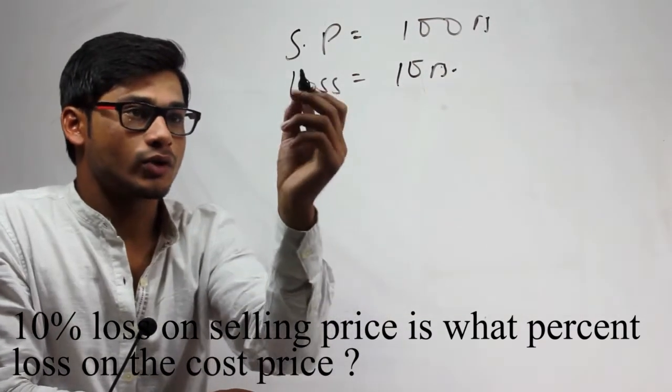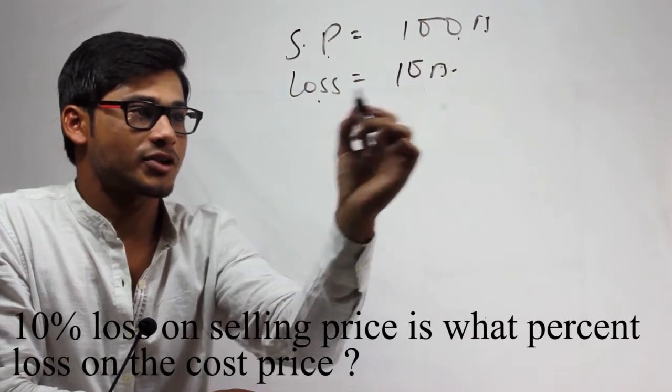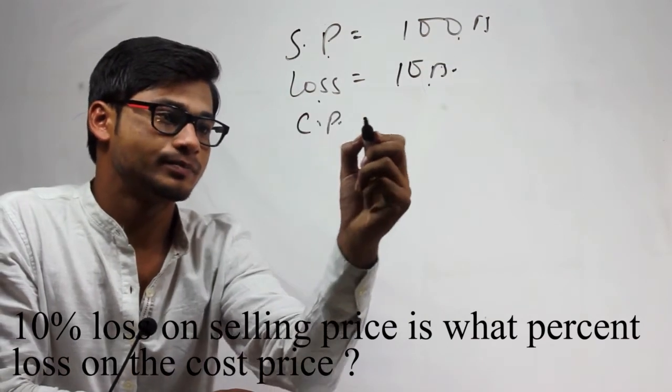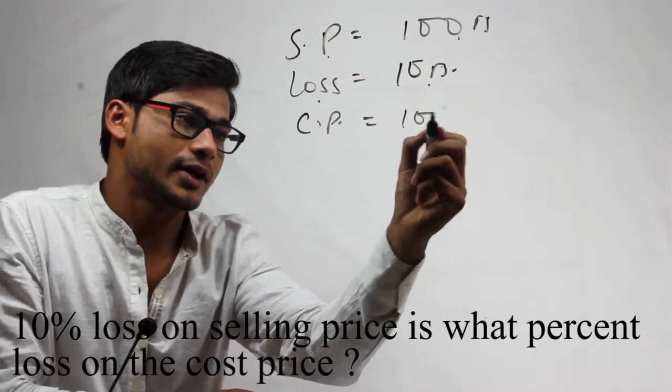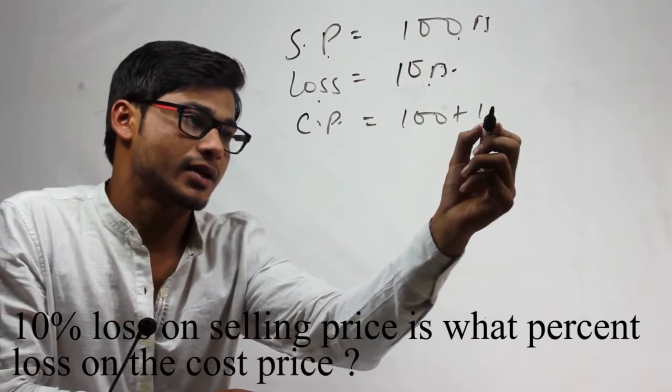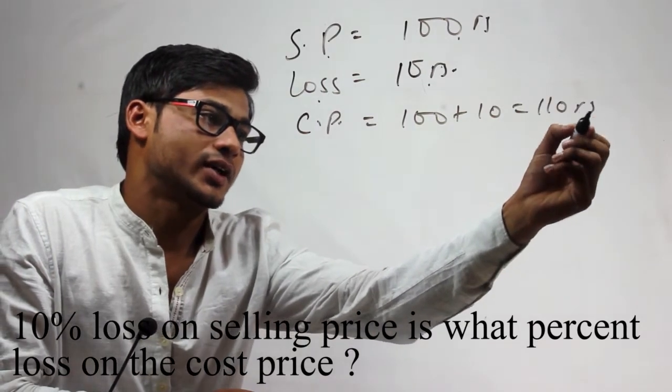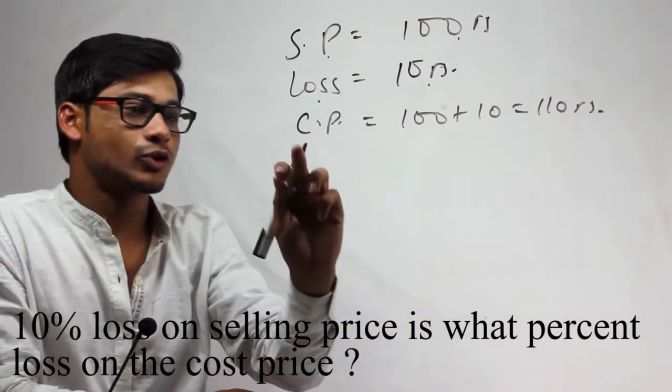So this selling price is 100 rupees and loss is 10 rupees. Cost price will be 100 plus 10, which means 110 rupees.